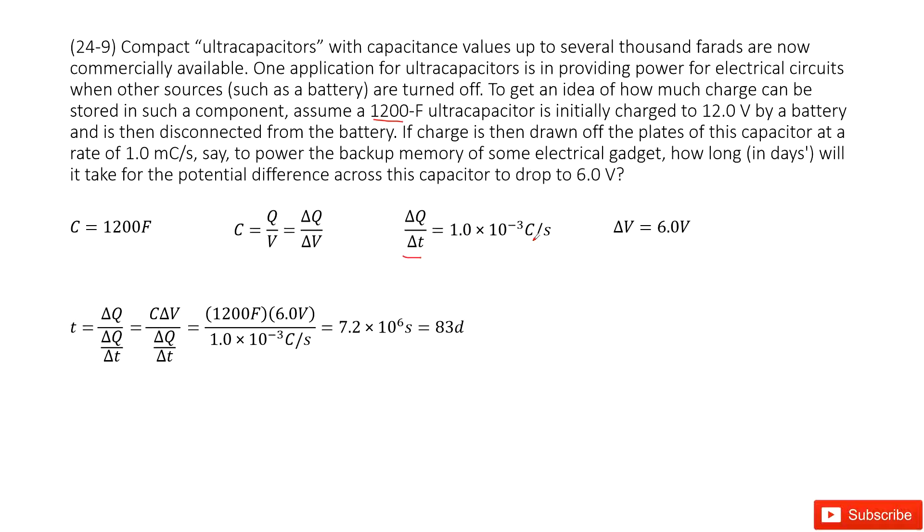It also tells us as time progresses, the potential difference for this capacitor changes from 12 volts to 6 volts. So the change of the potential difference is 6 volts.